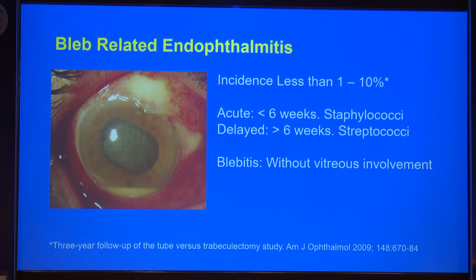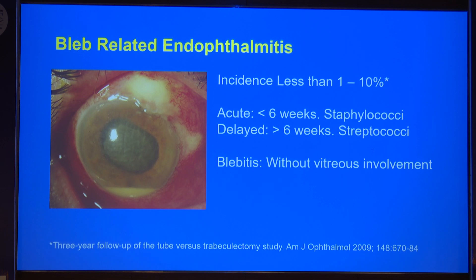The most feared complication is bleb-related endophthalmitis — it is noted in around 10% of glaucoma surgery eyes. It can be acute — within six weeks — or chronic — beyond six weeks. It is mostly because of periocular flora; Staphylococci and Streptococci are the most common causes. Blebitis is without vitreous involvement, and bleb-related endophthalmitis is with vitreous involvement, but in clinical practice most blebitis will ultimately go into endophthalmitis.